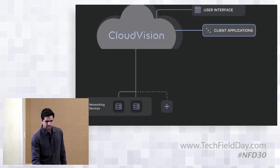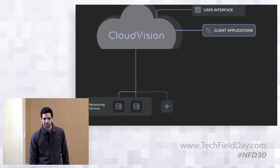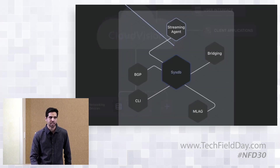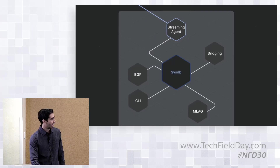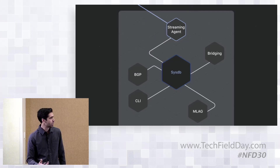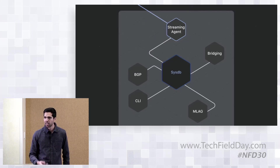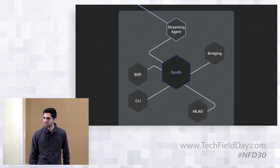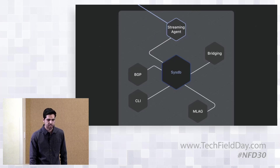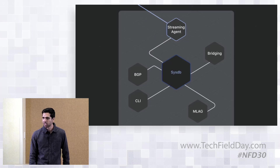Let's start by diving into what's actually happening on the device. From day zero — back in 2008 when EOS started — we've had the same diagram: a centralized database called SysDB, with a bunch of agents around it. It's a pub/sub model; agents aren't talking to one another, they're all talking through the centralized database. This led us in 2015 to introduce a streaming agent, which is really just a firehose of all the state in the system, and we can stream it off the box using gRPC.